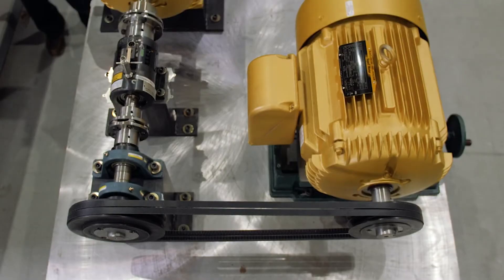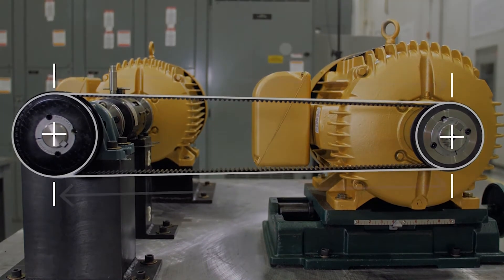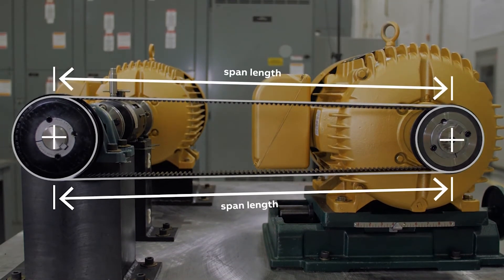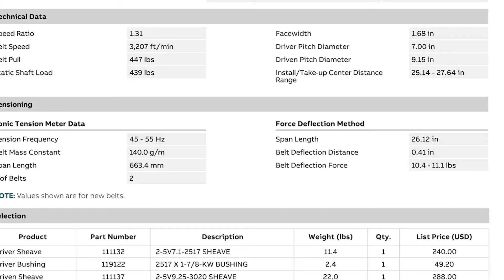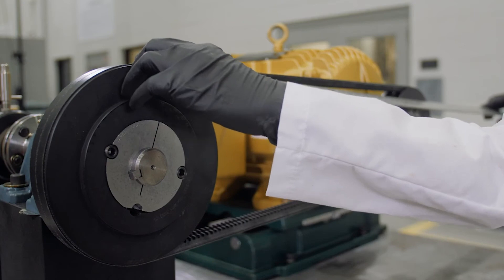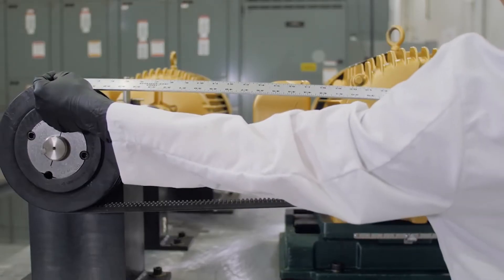First, determine the span length. The span length is the unsupported length of the belt between the driver and driven shivs. The span length is easily found in the tensioning section of the passport selection. If the results from passport are unavailable, measure the span length manually.